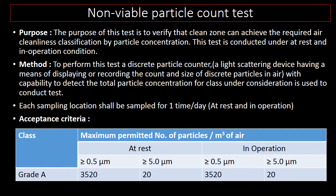The acceptance criteria for this test specifies the maximum permitted number of particles per meter cube of air. For Grade A, at-rest condition: 0.5 micron particles shall not exceed 3520 and 5 micron particles shall not exceed 20. For in-operation condition, the same limits are applicable — 0.5 micron particles shall not exceed 3520 and 5 micron particles shall not exceed 20.